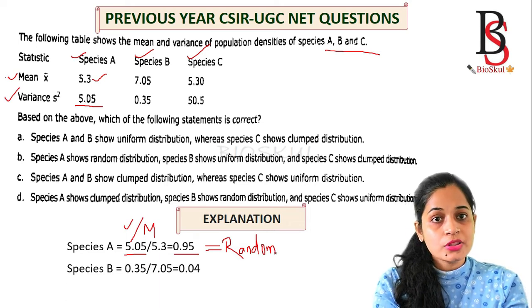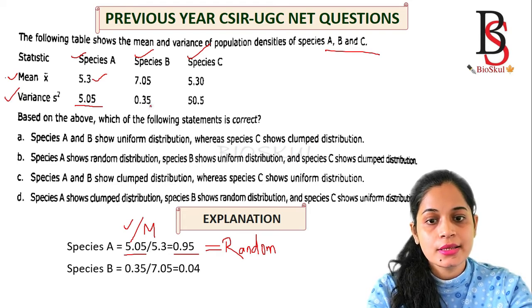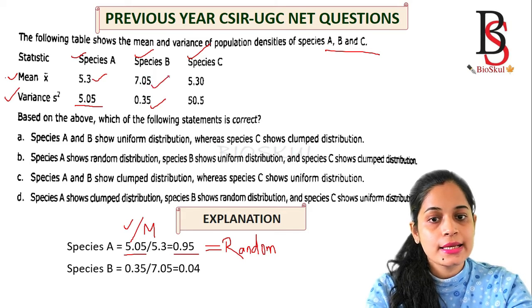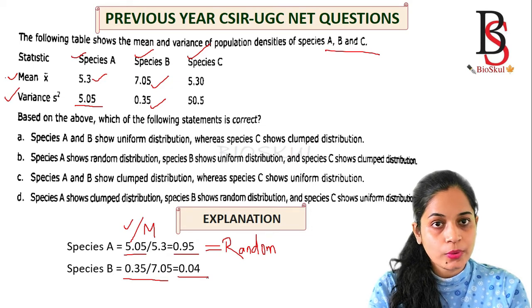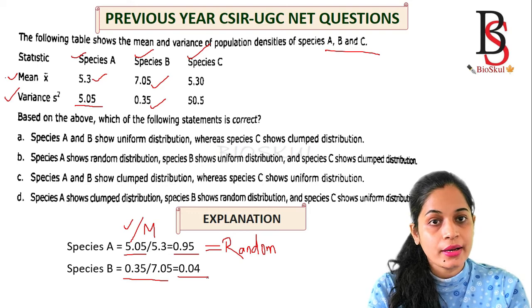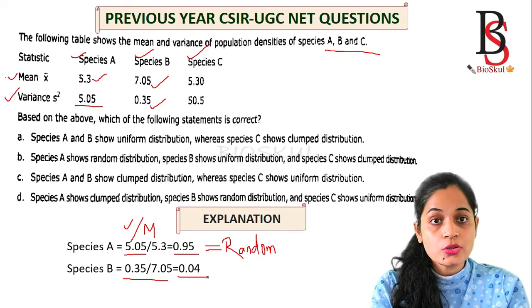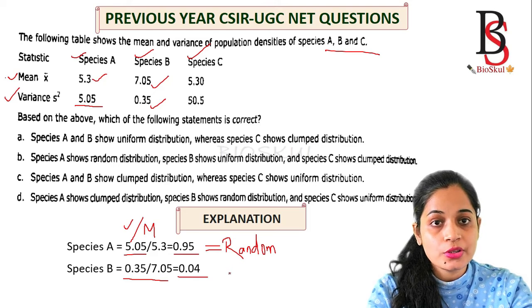For species B: variance is 0.35 and mean is 7.05, so dividing variance by mean gives 0.04. This value is less than 1. If the ratio of variance to mean is less than 1, it shows uniform distribution. So species B shows uniform distribution.